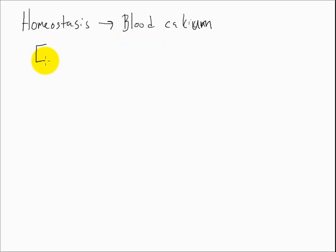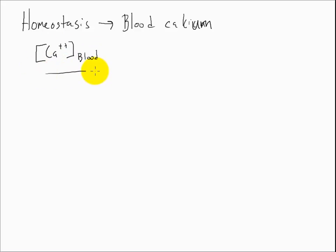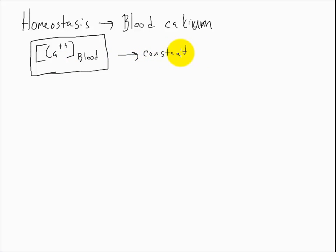I'm going to refer to blood calcium with square brackets and the elemental symbol for calcium. The point is we want to keep this constant, but we do know that periodically over time there will be fluctuations, and our body has to adapt to those fluctuations.